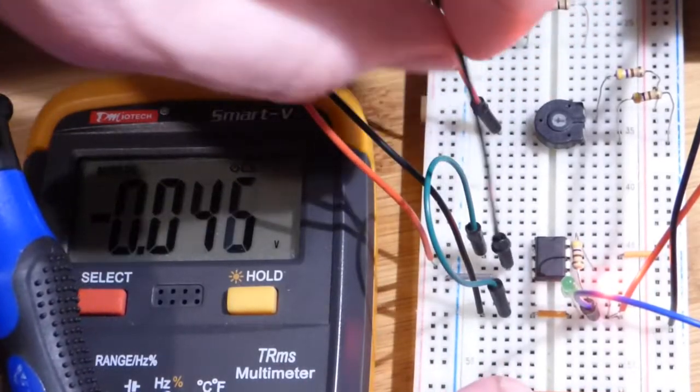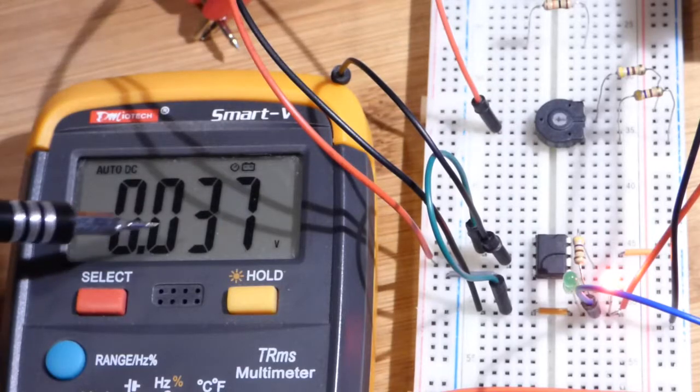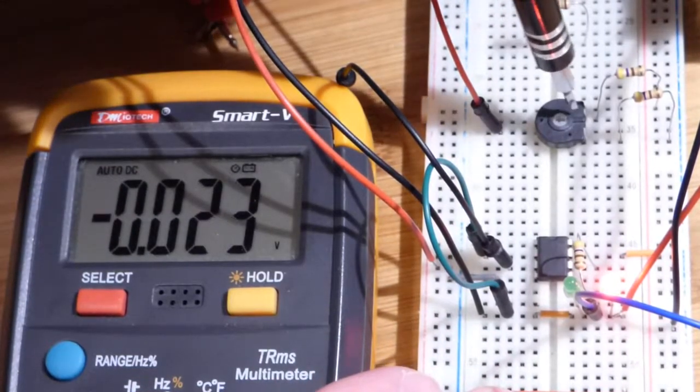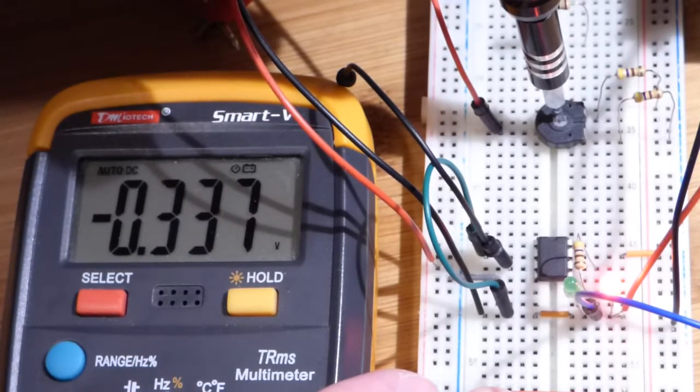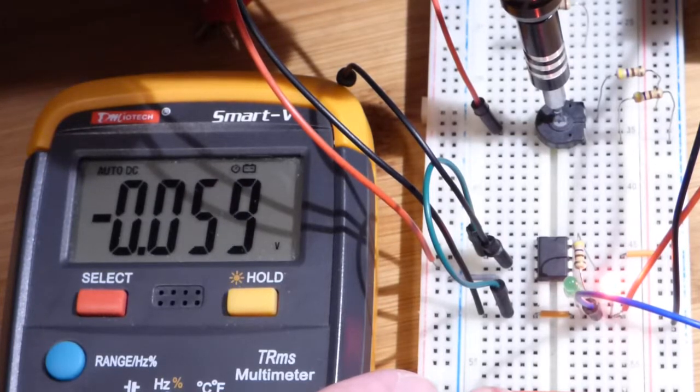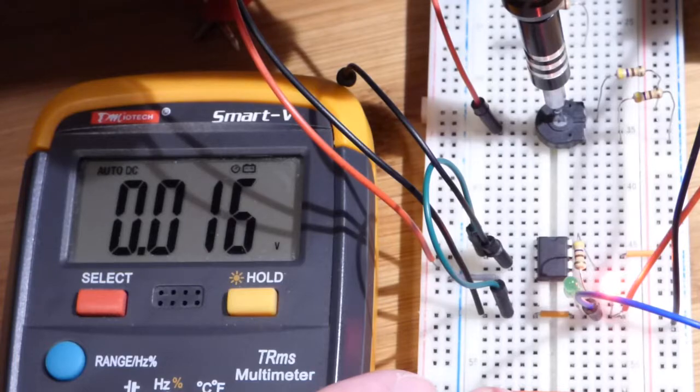If I remove the jumper that goes from the trim pot to the non-inverting pin, now you can see we're still really close to 0 volts, but nowhere near just one-thousandth of a volt. And I'm going to try to get it to completely 0 volts.